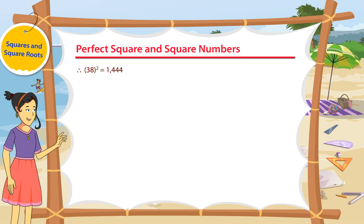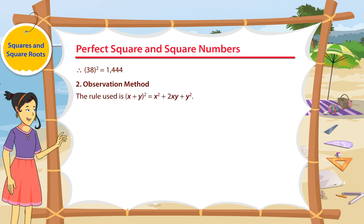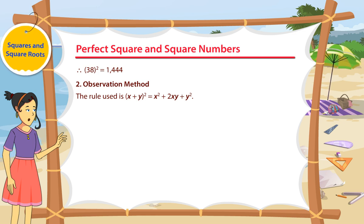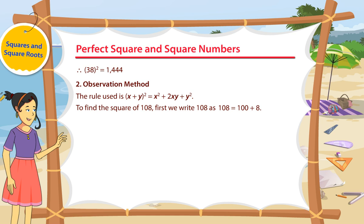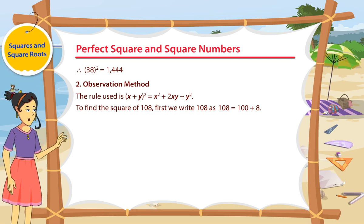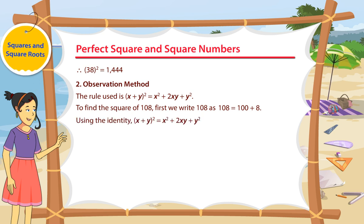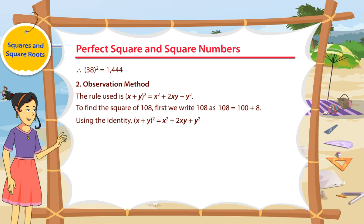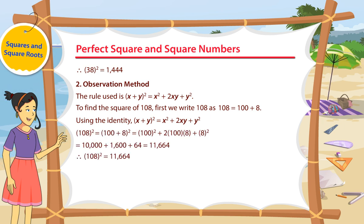The number formed by writing together the encircled numbers starting from column 1, then column 2, and then column 3 is the square of the given two-digit number. Therefore, 38 square is equal to 1444. Observation Method: The rule used is x plus y whole square is equal to x square plus 2xy plus y square. To find the square of 108, first we write 108 as 100 plus 8. Using this identity, we can write the given number as the square of sum of two numbers and find the square.